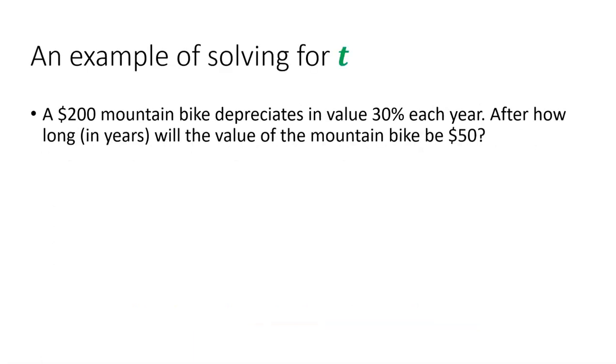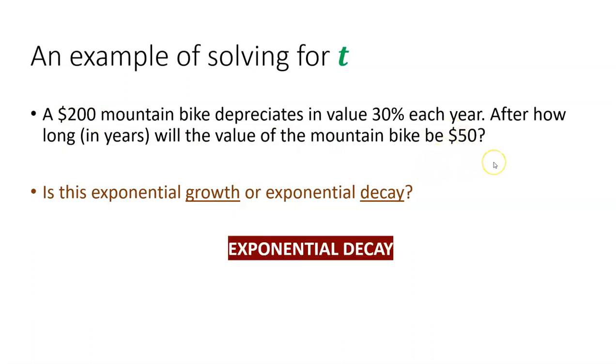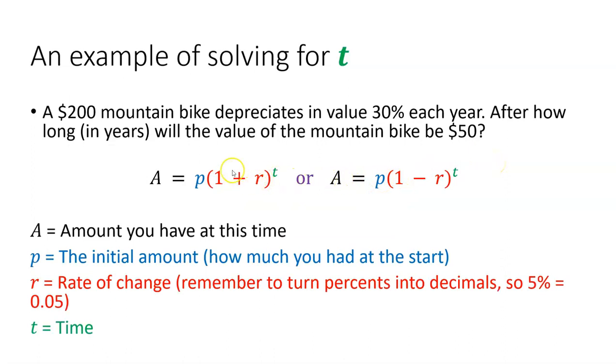Now, let's look at solving for t, time. We've got a $200 mountain bike that's going to depreciate in value 30% each year. So after how many years will the value of the mountain bike be down to $50? Is this exponential growth or exponential decay? Well, we see the word depreciate. That lets us know it's going down in value. That suggests exponential decay. And we also notice that the starting value, $200, is higher than our ending value, $50. So both of those let us know this is an exponential decay situation. So when we look at our two formulas, here's the growth with the plus sign, decay with the minus sign. We want this one.